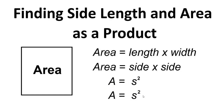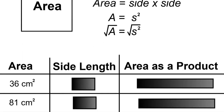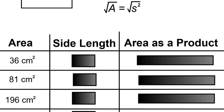So to find the value of one side, we'll do the opposite of squaring the side to isolate the S. We'll take the square root of side squared, therefore taking the square root of area. And this will give us the value of S, as the square root and squared will cancel.